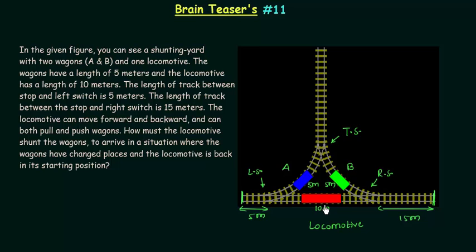So what do we have to do in this problem? We have to shunt these two wagons using the locomotive such that the two wagons switch their positions. Wagon A moves to the position of wagon B and wagon B moves to the position of wagon A.